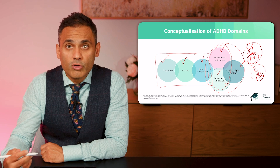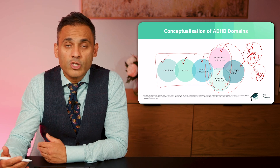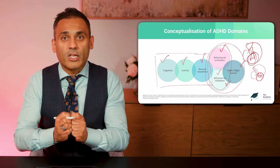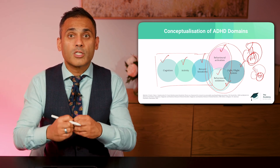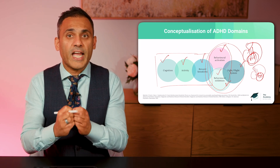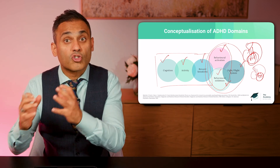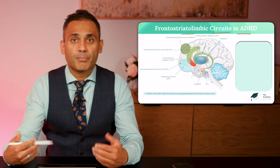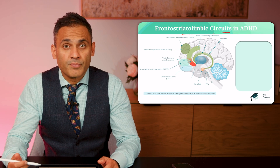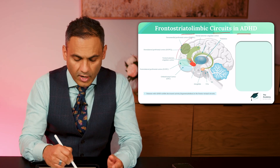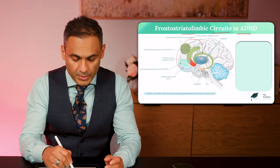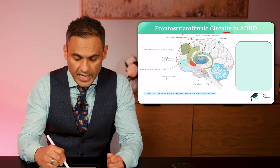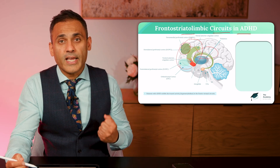From a neuroscience perspective, it's not surprising that emotional dysregulation forms a core part of ADHD and is such an important part of its treatment. The frontostriatal limbic circuits play a crucial role in ADHD — these are transdiagnostic. The frontal cortex, particularly the dorsolateral prefrontal cortex, is the seat of executive function. This is connected to the striatum, which mediates activity.